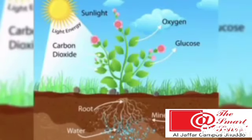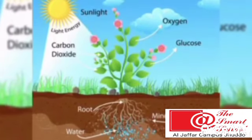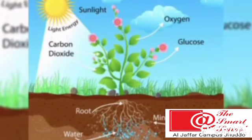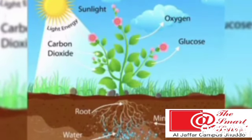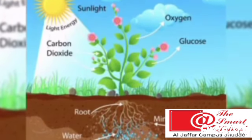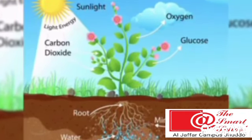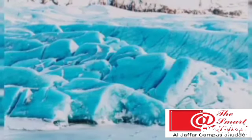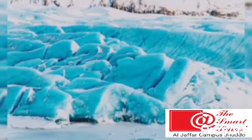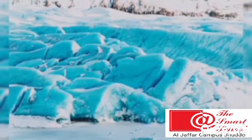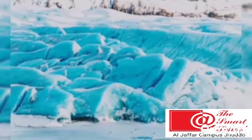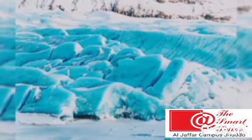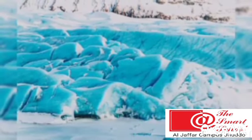The sun provides us with heat and light. Plants make their food from sunlight. It also keeps our skin healthy and fresh. Without the heat of the sun, earth would have been completely frozen and no living things would be able to survive on the planet earth.